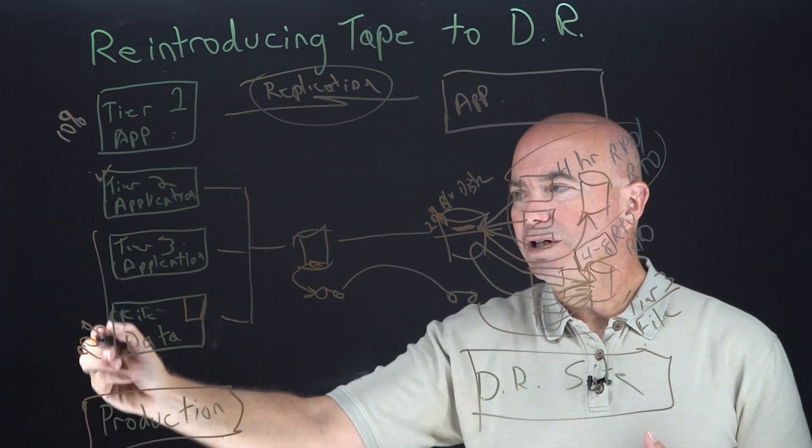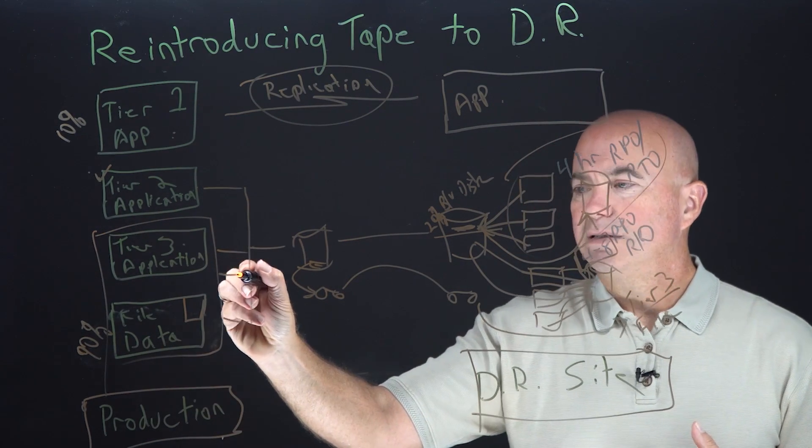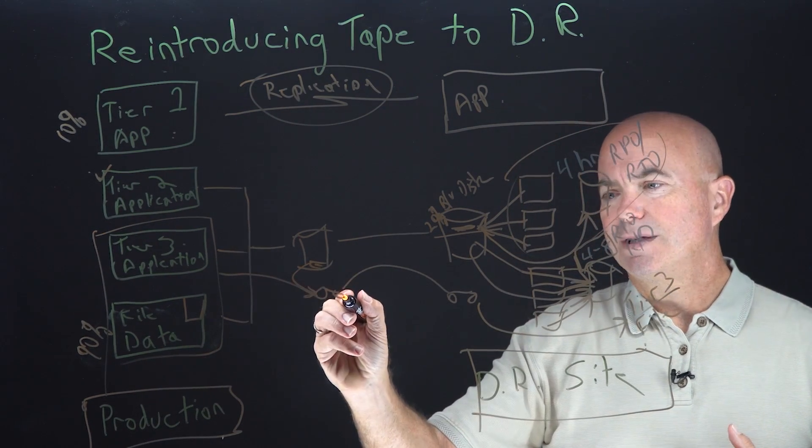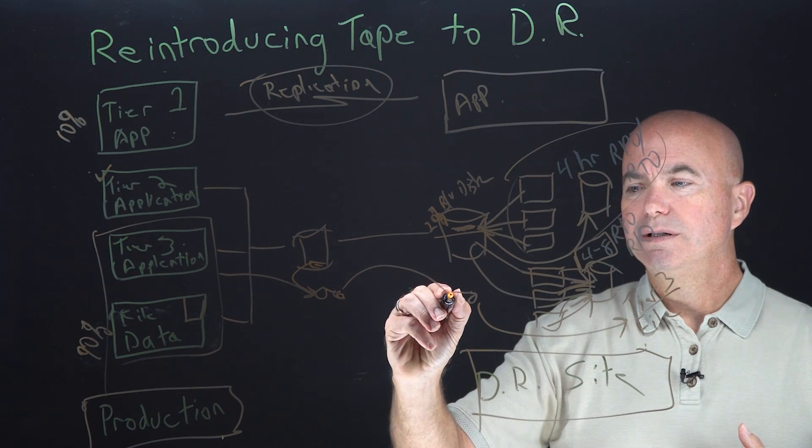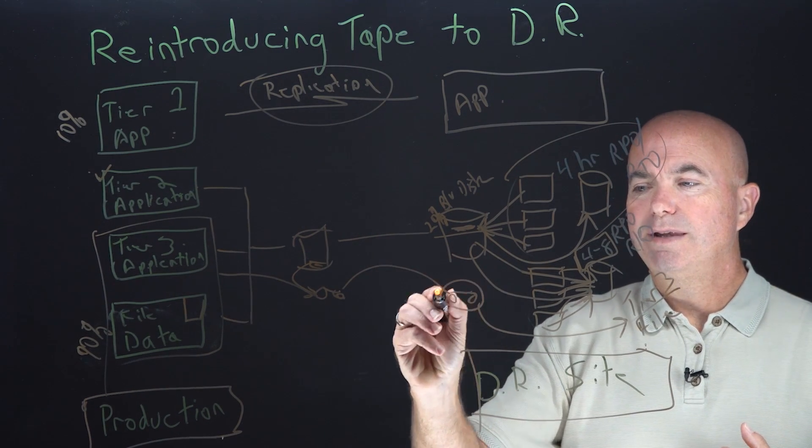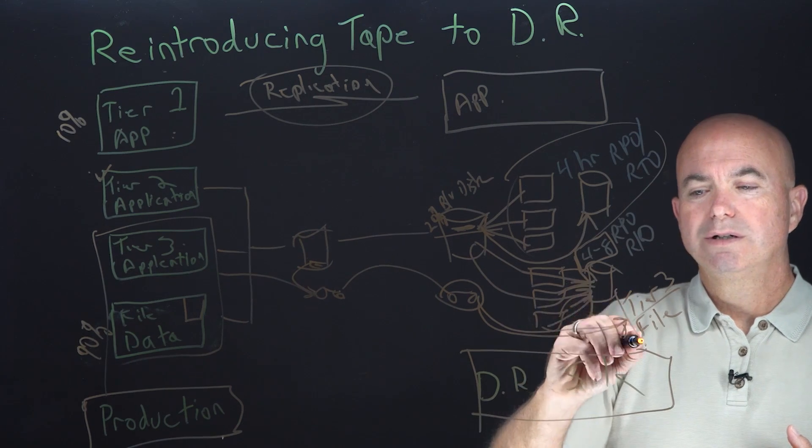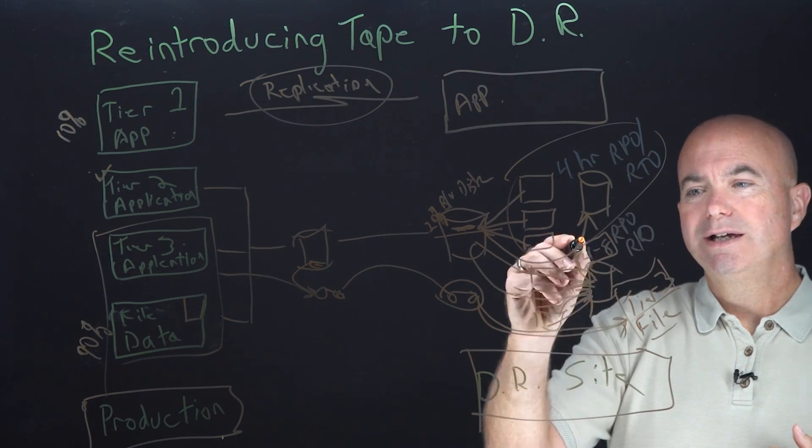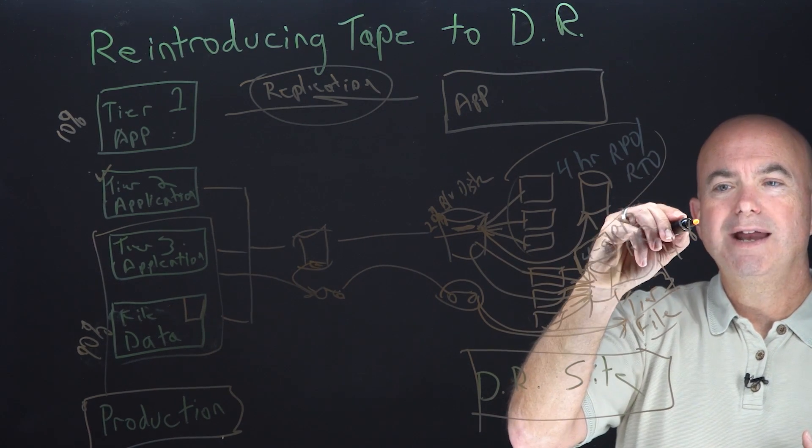But for tier three and file data, go ahead and use tape. Tape is very easily transported, it can land right there. And then we can do the recoveries directly from tape to storage at the DR site and comfortably hit that four to eight hour window.